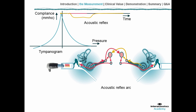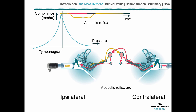Here we can see the pathway highlighted that is active when a loud sound is presented, in this case to the right ear. When you measure in the right ear while you also present the reflex activator in the right ear, we talk about an ipsilateral reflex. We can also present the loud sound at the opposite ear from where we test — when we measure the reflex in this way, we talk about a contralateral reflex. So there are ipsilateral and contralateral reflexes that we can measure.